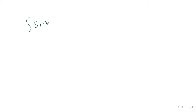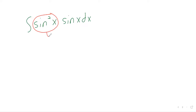So we've got sine cubed of x, which we've chosen to rewrite as sine squared times sine.